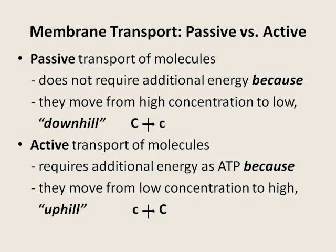Example: oxygen goes from the air into the blood because its concentration in the air is higher than in the blood. And if it is not, the person will not get any oxygen. Active transport is, in a way, the opposite of passive transport.